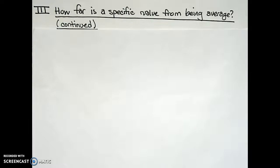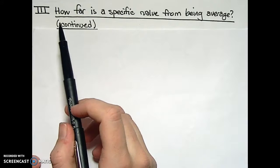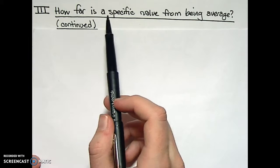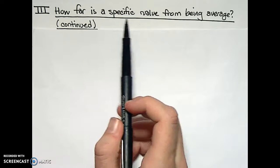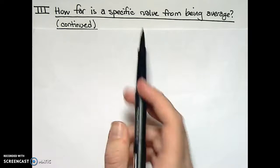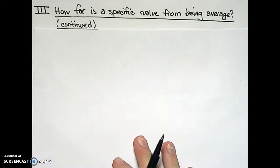Suppose we have a set of data values. The first thing we always consider is what is the average of the data values? After we have that and look at the big picture, it's time to consider individual data points. Specifically, we're going to continue our discussion of answering the question: how far is a specific value from being average?